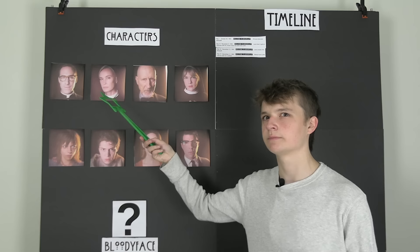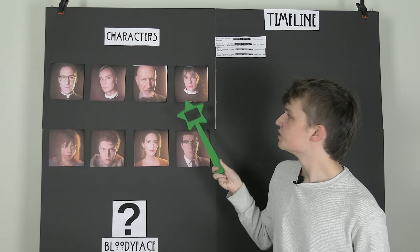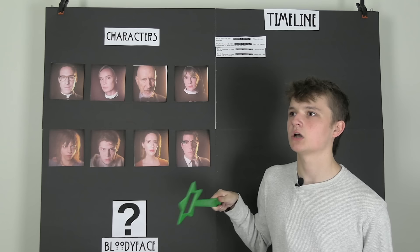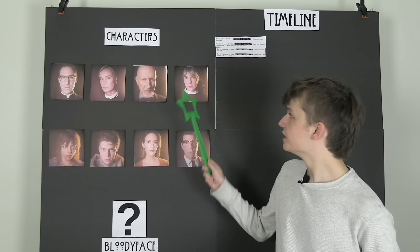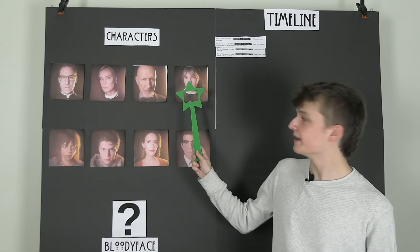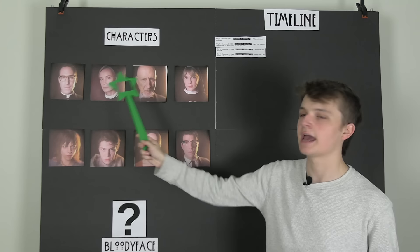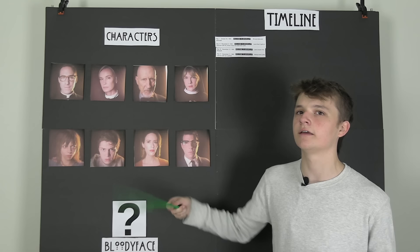Next we have Sister Mary Eunice, who essentially turns into the devil in episode two. The words I wrote down for her character are mainly based on the first episode before the devil takes over: she's very innocent, very childlike, quiet, and very obedient to Sister Jude. Sister Jude is the head nun at the asylum, in charge of overseeing the health and well-being of all of her patients — a thing she does not do a very good job at.